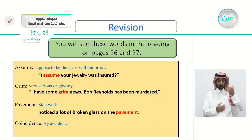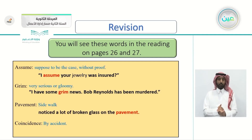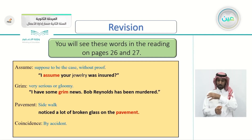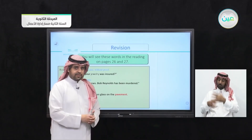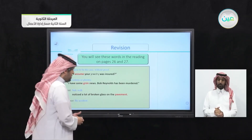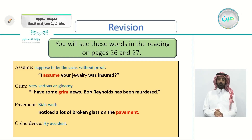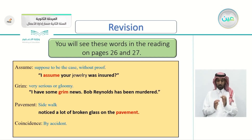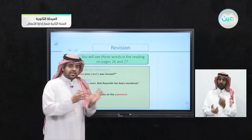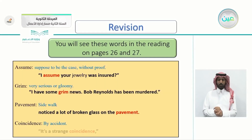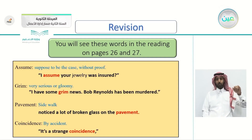The word 'pavement' means the sidewalk. We'll see it in this sentence: 'Noticed a lot of broken glass on the pavement.' The word 'coincidence' means by accident — something that's not intentional, you didn't mean to do it. We will see this word in this sentence: 'It's a strange coincidence.'